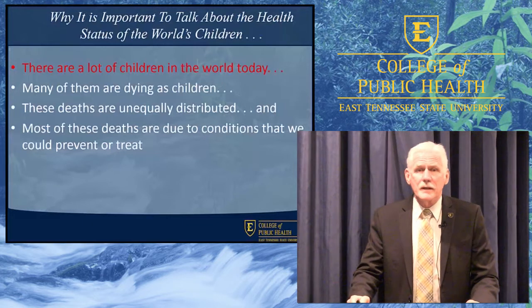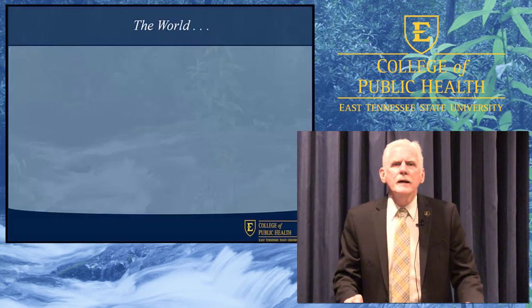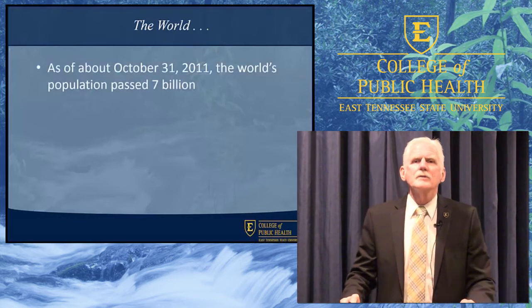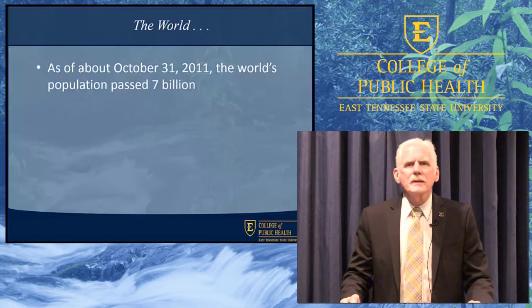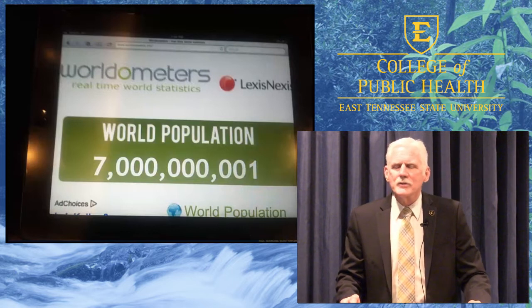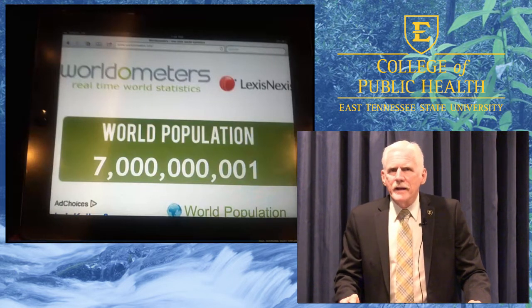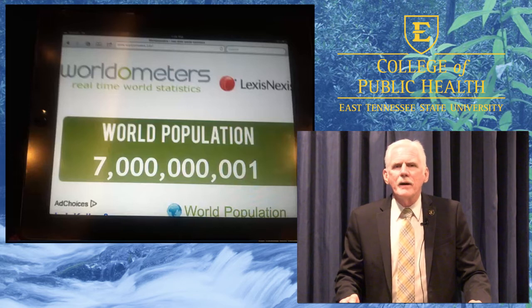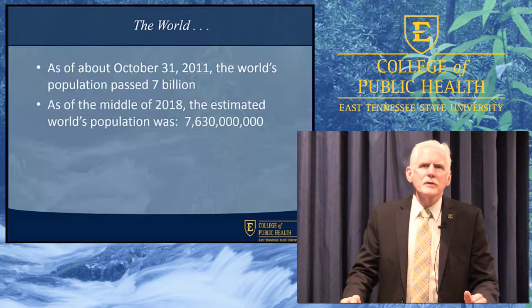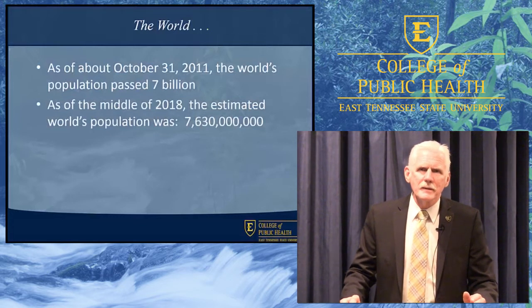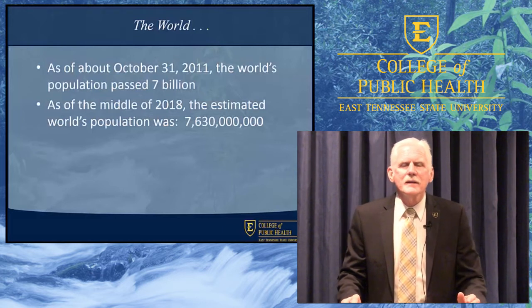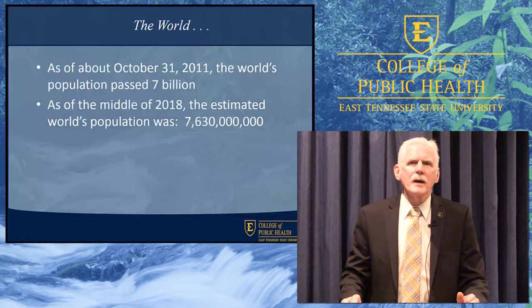There are a lot of children in the world today — there are a lot of people in the world today. As of October 31st, 2011 — Halloween 2011 — the world's population passed 7 billion. This is a screenshot I took as that population change happened. By the middle of 2018, less than seven years later, the world's population had already grown to 7.6 billion. So in less than seven years, 600 million people have been added to the population of the earth.